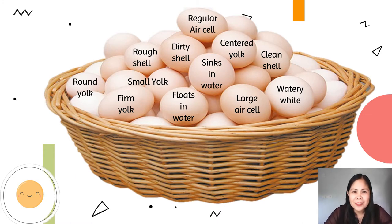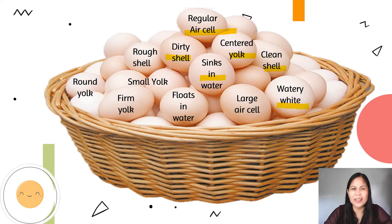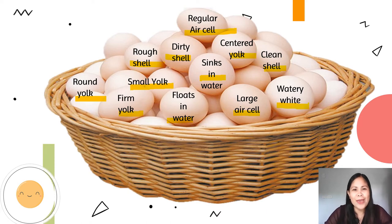I'm going to give you 5 minutes for you to determine the different characteristics. What are the different characteristics of eggs in the basket? We have a regular air cell, a centered yolk, clean shell, water white, sinks in water, or is it dirty shell, rough shell, small yolk, round yolk, firm yolk, and floats in water as well as large air cell. Determine whether they are fresh or not.